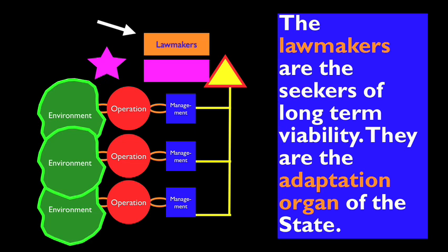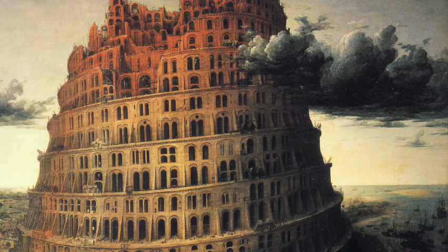The next step in the complexification of the control systems of the state is the appearance of the lawmakers. They are the minimal state's organ for long-term adaptation. Legislation is always directed to the future, never to the past. Since the future can only be guessed, legislators inevitably have to play the role of model-makers. Given that ideologies have hidden models of the world, the Viable System Model could put an end to the Babel Tower syndrome in politics.